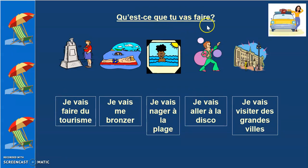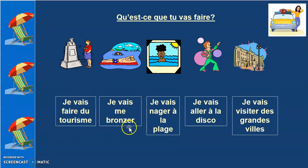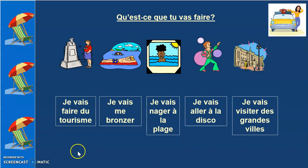Qu'est-ce que tu vas faire? — What are you going to do? Now you've come for a holiday — what are you going to do? Je vais faire du tourisme, je vais me bronzer, je vais nager à la plage, je vais aller à la disco, je vais visiter des grandes villes. From the pictures you must be able to understand, or we have also done these words in our previous lessons.